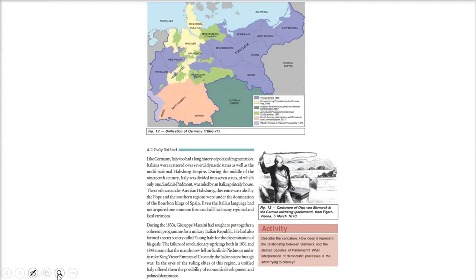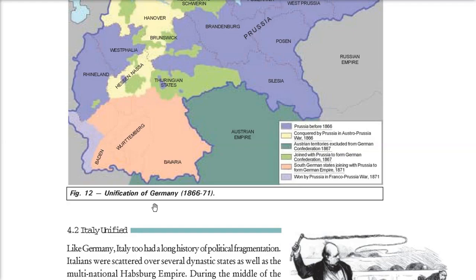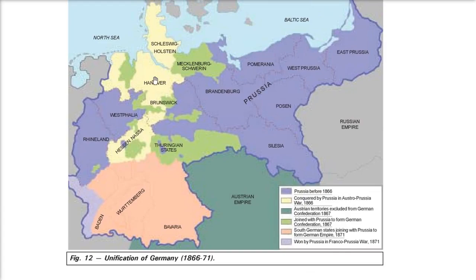Before discussing Italian unification, let us look at the map of regions. The yellow areas show Prussia before 1866. Areas conquered by Prussia in the Austro-Prussian War of 1866 are highlighted, as are Austrian territories excluded from the German Confederation in 1867. The light green areas joined Prussia to form the German Confederation, the pink areas show South German states joining Prussia to form the German Empire in 1871, and other regions were won by Prussia in the Franco-Prussian War.